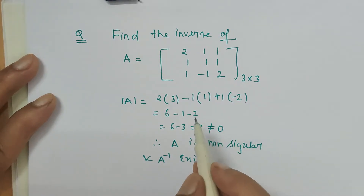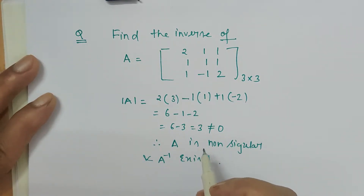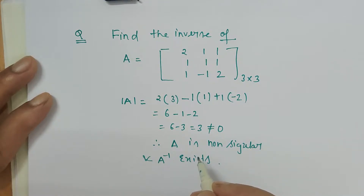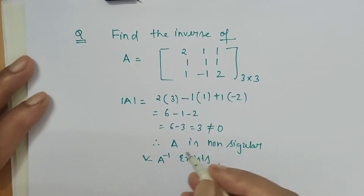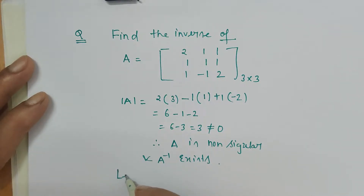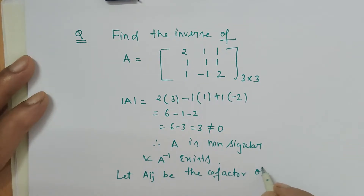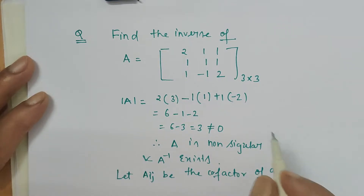Each and every step is very important and we cannot skip even a single step, because that may lead to a reduction in marks. The next step is to let capital A_ij be the cofactor of small a_ij — that means we are going to find the cofactor of each element.